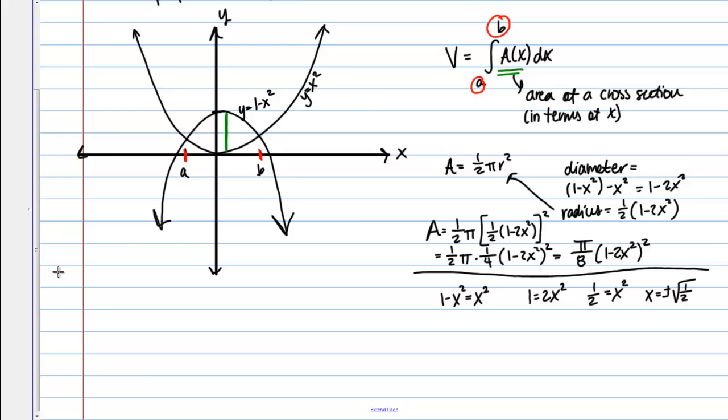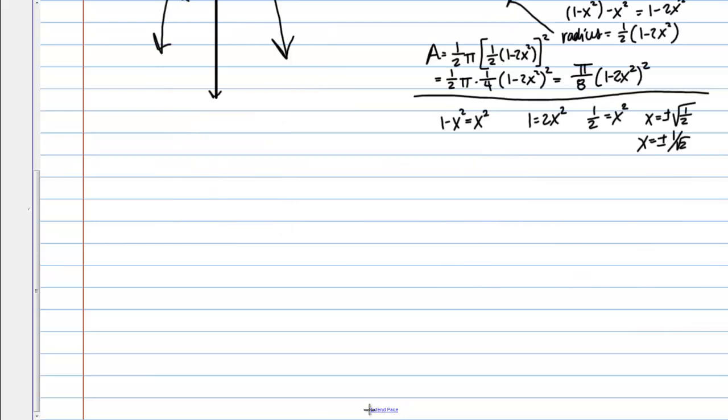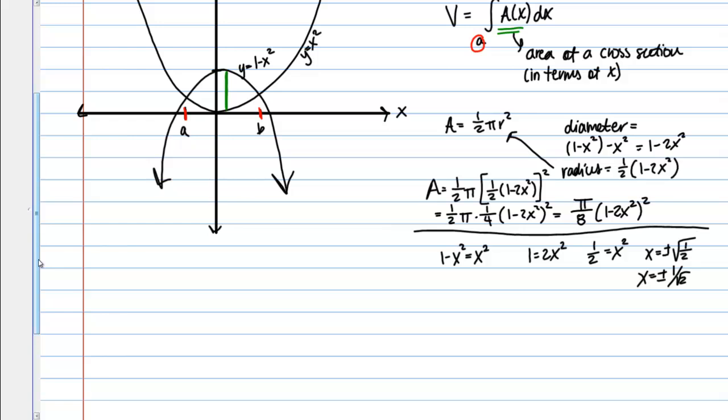And here I only need those X values. I don't really care about the Y values in my case. And I could also, if you like, write this as plus or minus 1 over root 2. That would be equivalent. So now I'm actually ready to set up my integral. I have all the information I need. So the volume of this solid is going to be given by the integral from negative 1 over root 2 to positive 1 over root 2 of this pi over 8 times the quantity 1 minus 2X squared quantity squared. I could also pull that pi over 8 out front and write my expression like this.